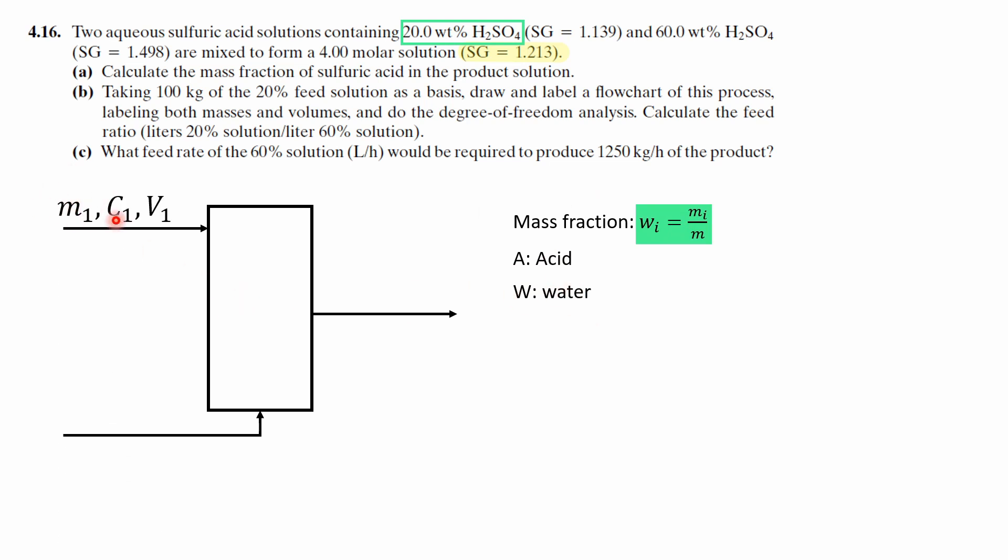So for the first one it will be the first stream with mass 1 and a corresponding concentration and volume as well as the corresponding mass fraction. So this is the mass fraction of acid in the first stream. And we can also label the specific gravity as density. I like to use SI units.